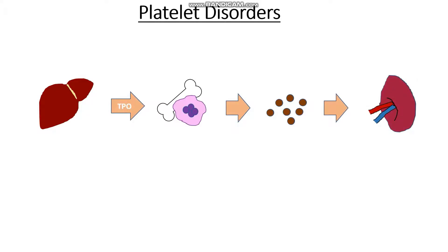Now if we backtrack and see where things can go wrong, we can see that if we don't have enough thrombopoietin, we might not have enough platelets because we won't be telling anyone to make them. So what could cause a reduction in thrombopoietin levels? Well any damage or insult to the liver could cause an issue with thrombopoietin, and this includes things like liver cirrhosis, where we have a fatty, dysfunctional liver, or excessive alcohol intake, which might lead to liver cirrhosis.